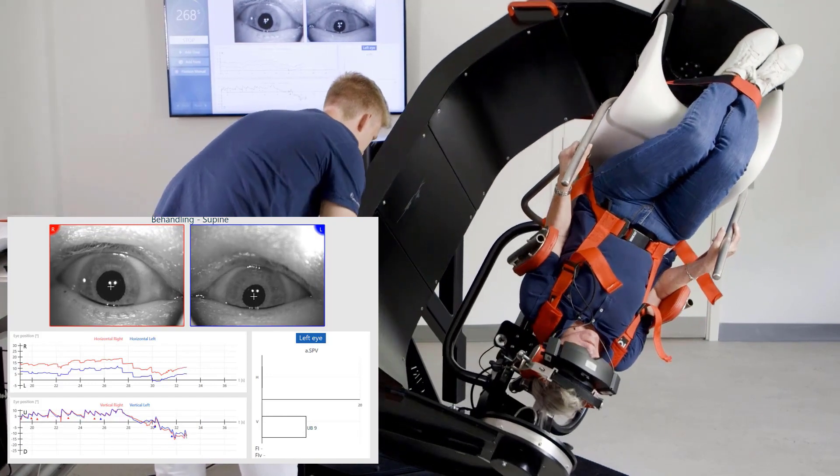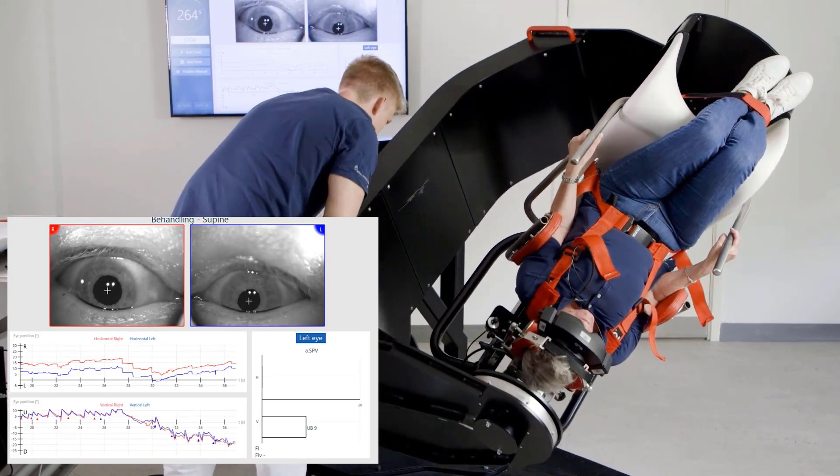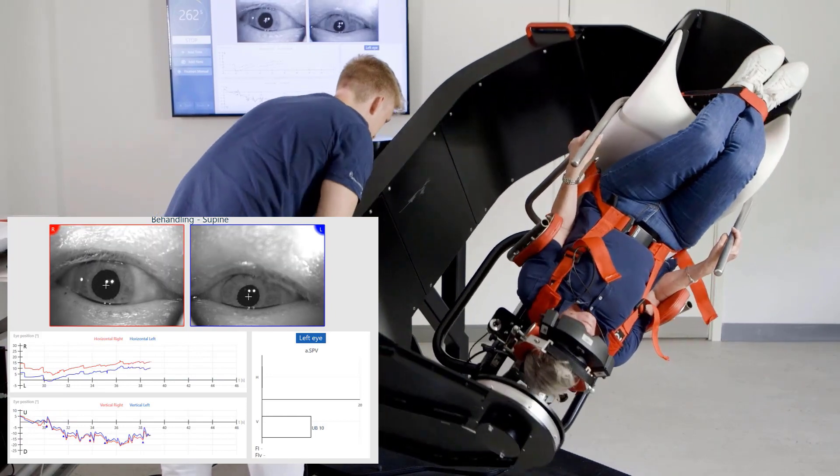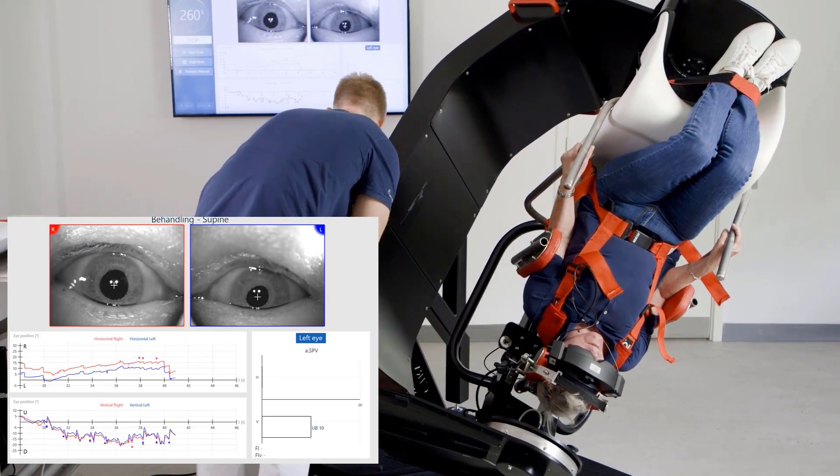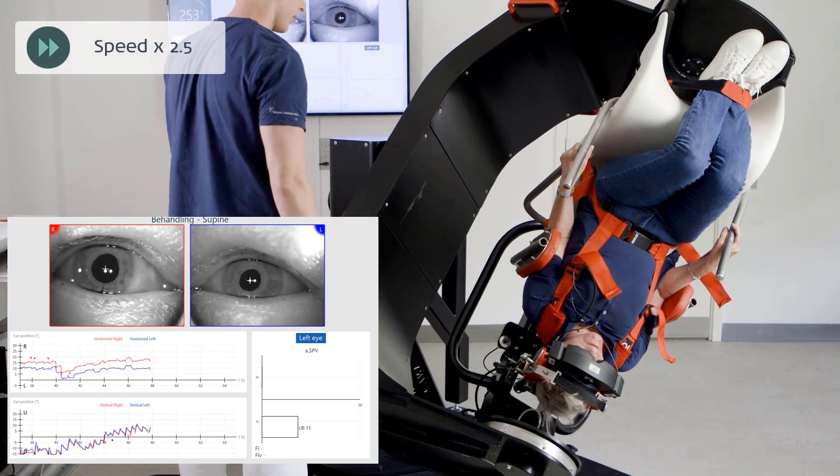The patient is initially turned 45 degrees to the right and then moved backwards approximately 135 degrees. Positional nystagmus is observed and 10 kinetic impulses are applied.